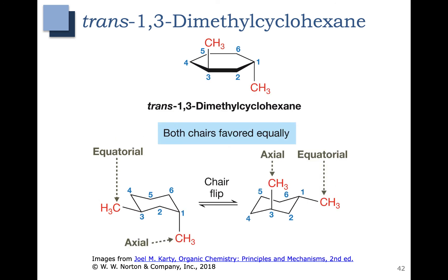In trans-1,3-dimethylcyclohexane the methyl groups are on opposite sides. The methyl group at carbon 1 is down — so it's down and axial in one conformation and down and equatorial in the other. The methyl group at carbon 3 is up — so it's up and equatorial in one conformation and up and axial in the other. Comparing these two chair conformations, both have one axial methyl group and one equatorial methyl group, so these two chair conformations are both equally favored and we would expect to see them in a 50/50 mixture. This concludes our discussion on chair conformations. On the exam you'll be expected to take a Haworth projection or a hash-wedge projection and draw both chair conformations and compare them in terms of energy.